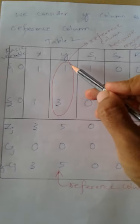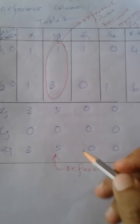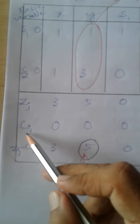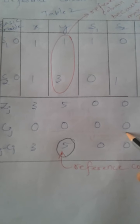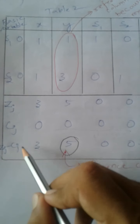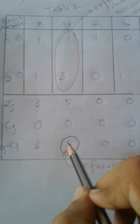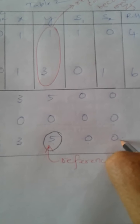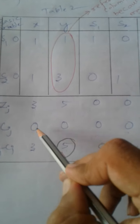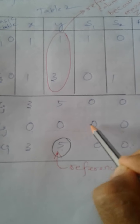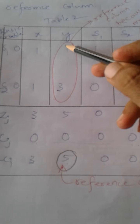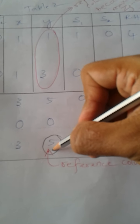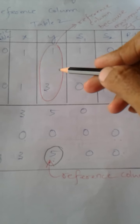We are going to consider the second column because of Zj minus Cj. All the Cj values were 0: C1, C2, C3, C4. The Zj minus Cj values are: Z1 minus C1 was 3, Z2 minus C2 is 5, Z3 minus C3 is 0, and Z4 minus C4 is also 0. The second column is selected because Z2 minus C2 was the highest value.